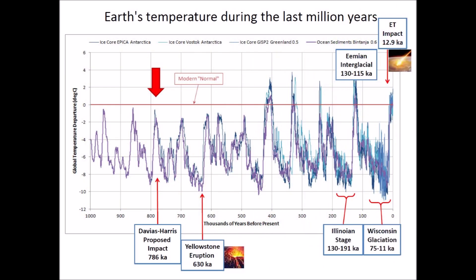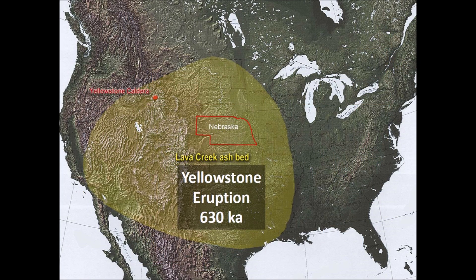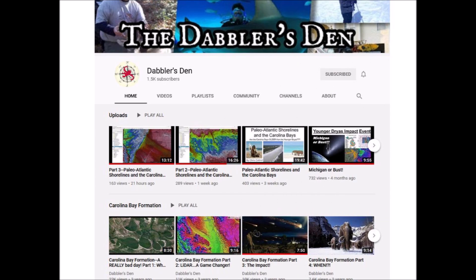Looking back at our reference chart, we see that 786,000 years ago the Earth was in an interglacial period. This is not important for the Davias-Harris hypothesis because they proposed that bubbles in a slurry of water and sand made the bays rather than impacts by ice boulders. However, it is important to note that the Yellowstone caldera erupted 630,000 years ago. If the Davias-Harris hypothesis is true, the Nebraska Rainwater Basins should have been overlaid by the Lava Creek ash bed from the Yellowstone eruption — but this layer of volcanic ash is not mentioned in the relevant literature.